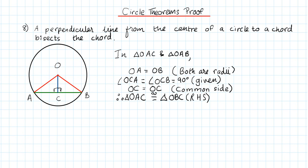So since the two triangles have been proved to be congruent, we can then say AC is equal to CB. Therefore, this line OC is not only perpendicular to the chord, it also bisects the chord. So a perpendicular line from the center of a circle to a chord will bisect the chord. That's the proof. Thank you for watching, assalamu alaikum.